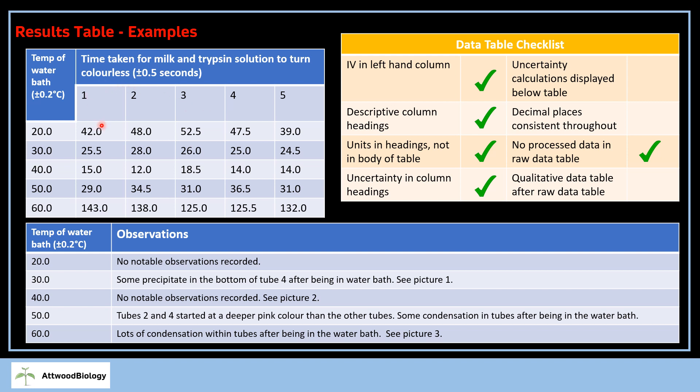We've got temperature of the water bath, also descriptive. As a marker, I should know what your IA is from the headings. As a teacher, we've seen lots of IAs—we can already work out what you're doing from those descriptive column headings. You can also see this has been split into trial one, two, three, four, five, rather than leaving that blank. Try to do that too. Decimal places are also consistent throughout. The uncertainty is ±0.5 seconds to one decimal place, so I've changed all these results to one decimal place.